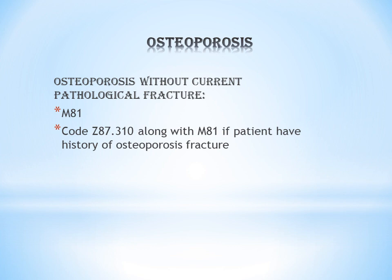Next is osteoporosis. Osteoporosis is a pathological systemic condition that affects all bones, wherein bone density decreases. The codes for osteoporosis are M80 and M81. There are two types.